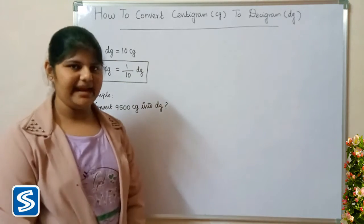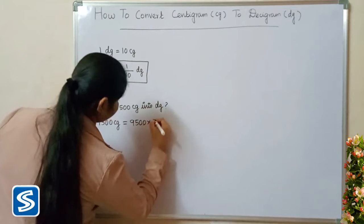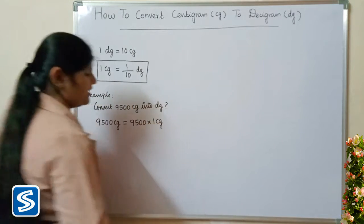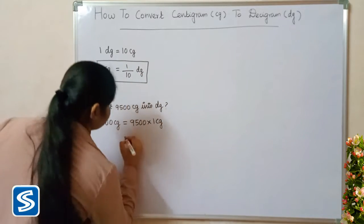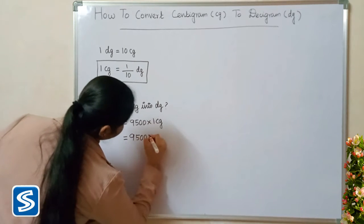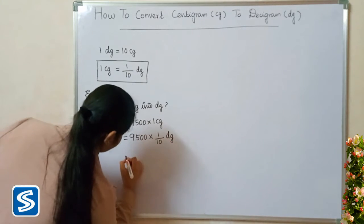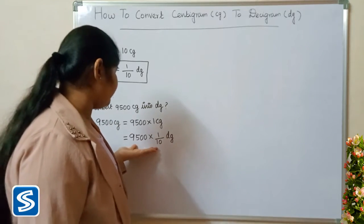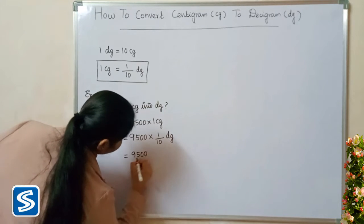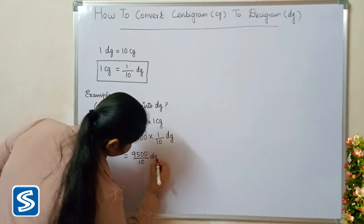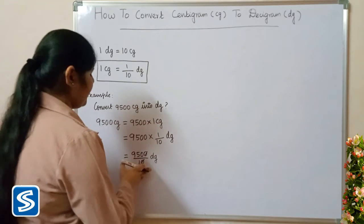9500 centigrams can be written as 9500 multiplied by 1 centigram. Now we have to substitute 1 by 10 decigrams in the place of 1 centigram. So 9500 multiplied by 1 by 10 decigrams. That gives us 9500 divided by 10 decigrams.